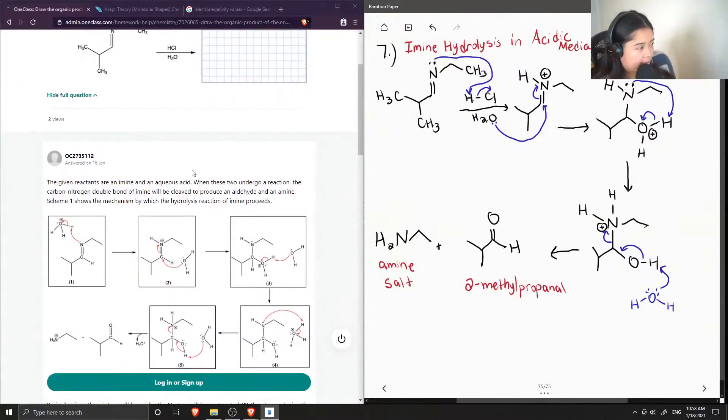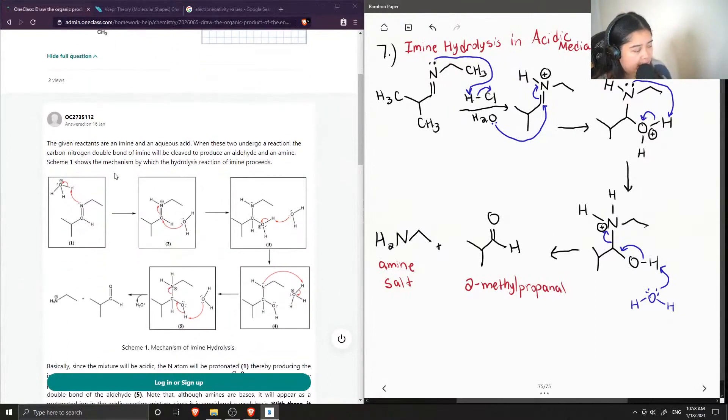The given reactants are an imine and an aqueous acid. When these two undergo a reaction, the carbon-nitrogen double bond of imine will be cleaved to produce an aldehyde and an amine. Scheme 1 shows the mechanism by which the hydrolysis reaction proceeds.